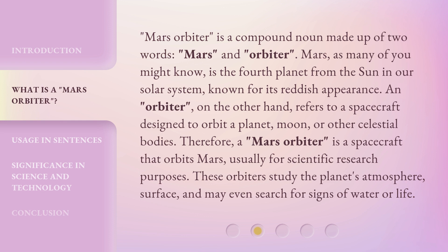or other celestial bodies. Therefore, a Mars Orbiter is a spacecraft that orbits Mars, usually for scientific research purposes. These orbiters study the planet's atmosphere, surface, and may even search for signs of water or life.